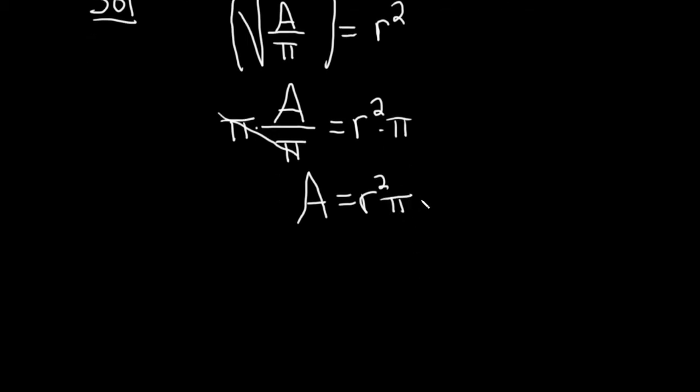This might seem like a very familiar formula, especially if we write it like this: A equals π r squared. This is a very familiar formula. This gives you the area of a circle.